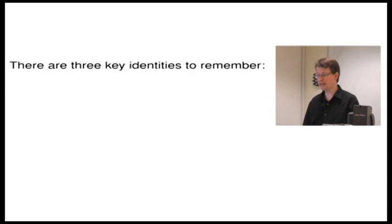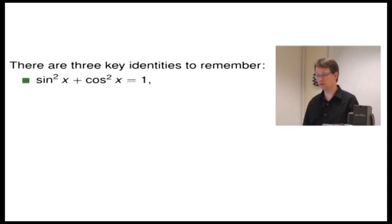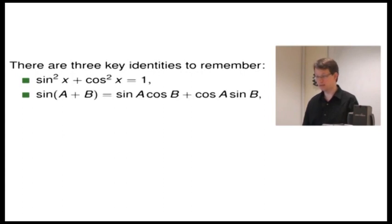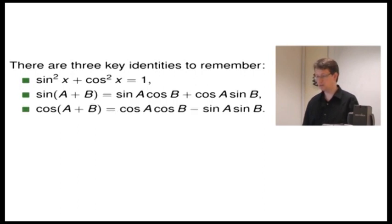This saves us having to remember them all. There are three key identities to remember. First of all, a very important one: sine squared x plus cosine squared x equals 1. Next, we have sine(a+b) equals sine a cos b plus cos a sine b. And the last one is cosine(a+b) equals cosine a cosine b minus sine a sine b. Those last two are called the addition formulae.